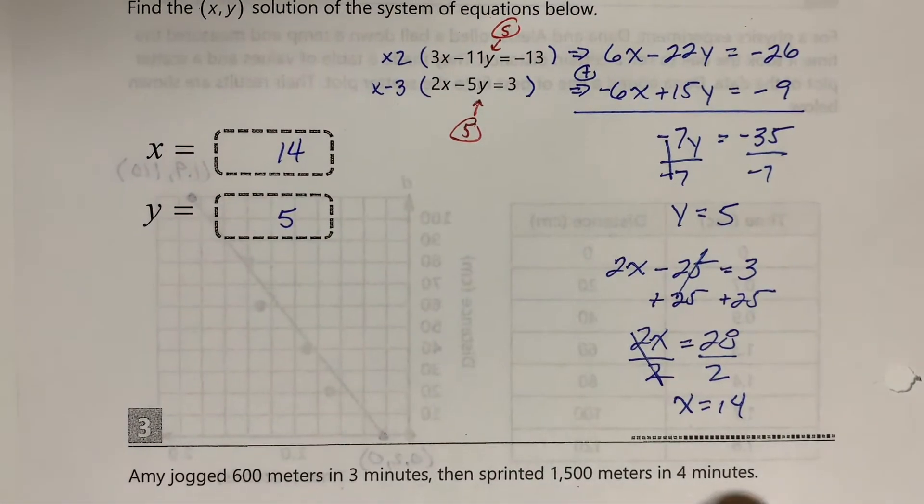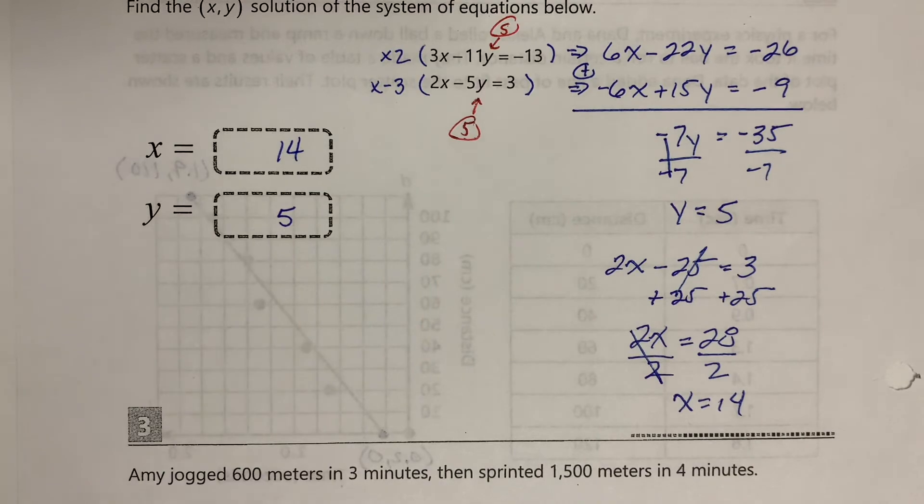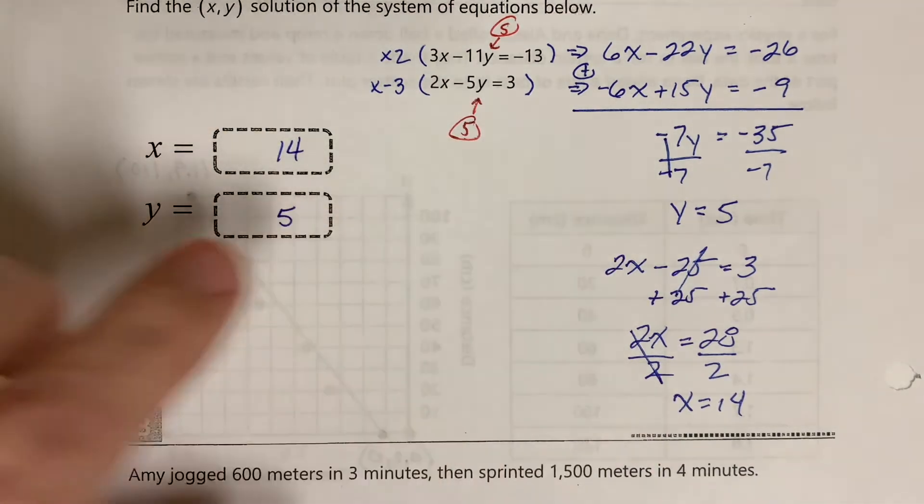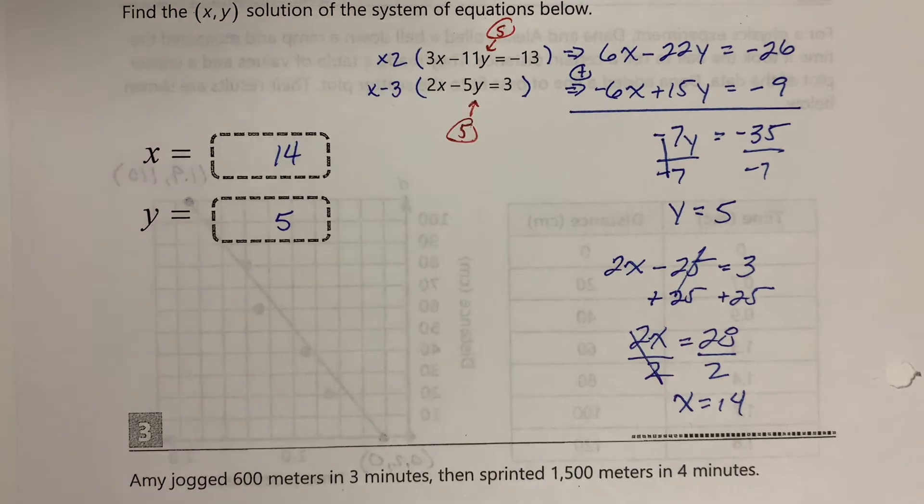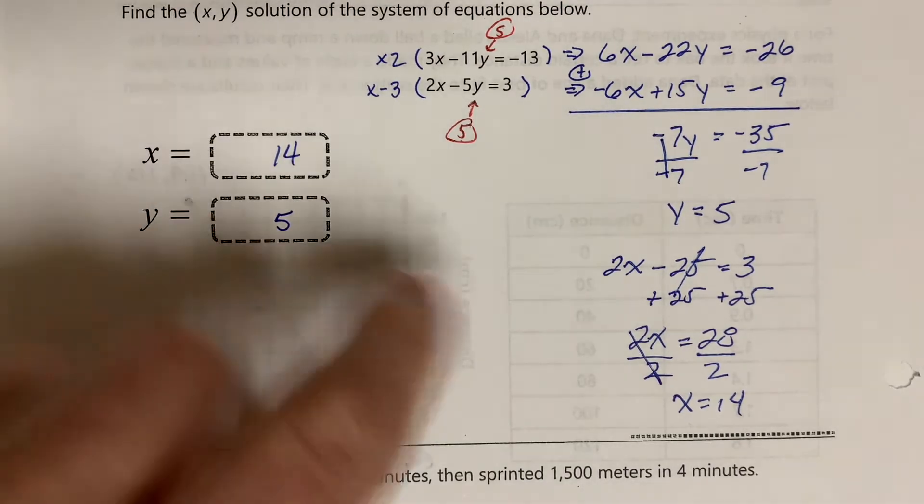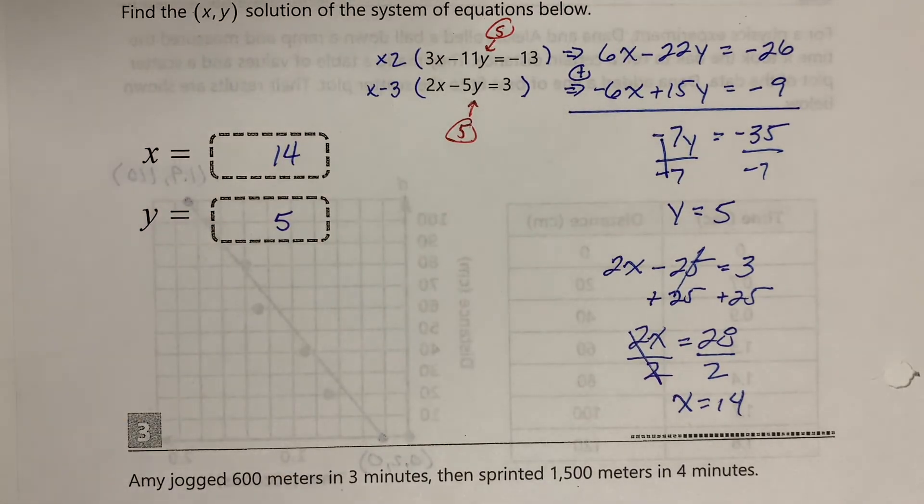When you're solving this, obviously when I'm looking at the answers, I want to see work on this. There's no way people are going to look at this and say, oh well I know it's 14 and 5. You're going to need to show your work, and I will never accept an answer for a system of equations like this that does not have any work with it.